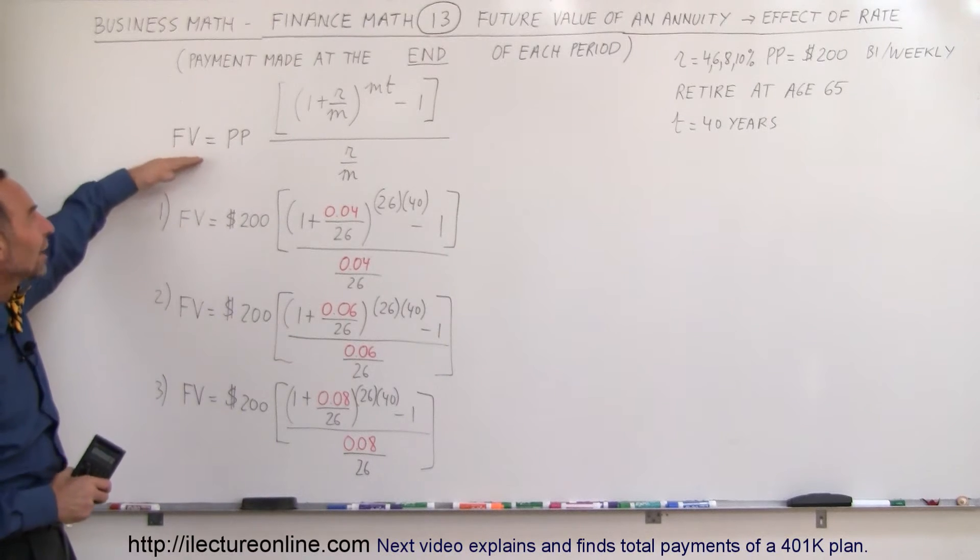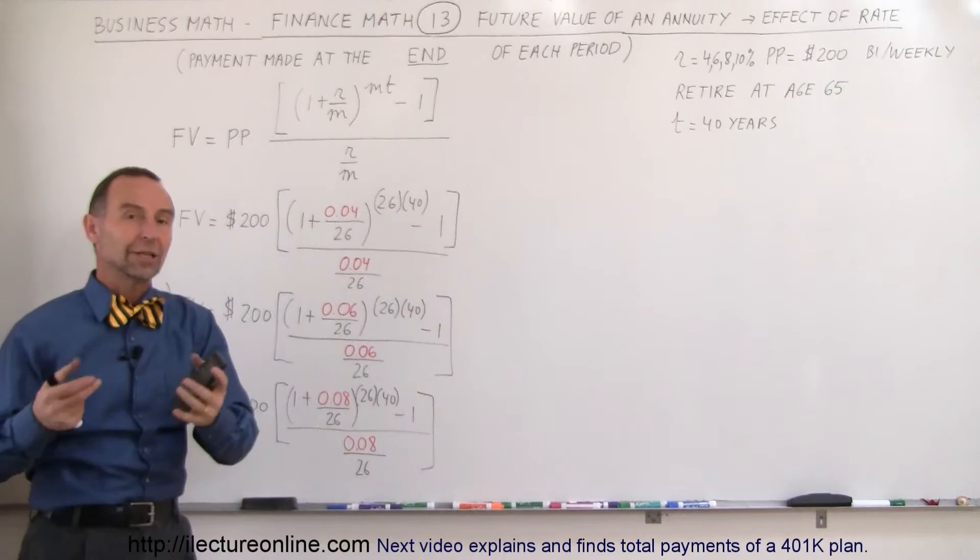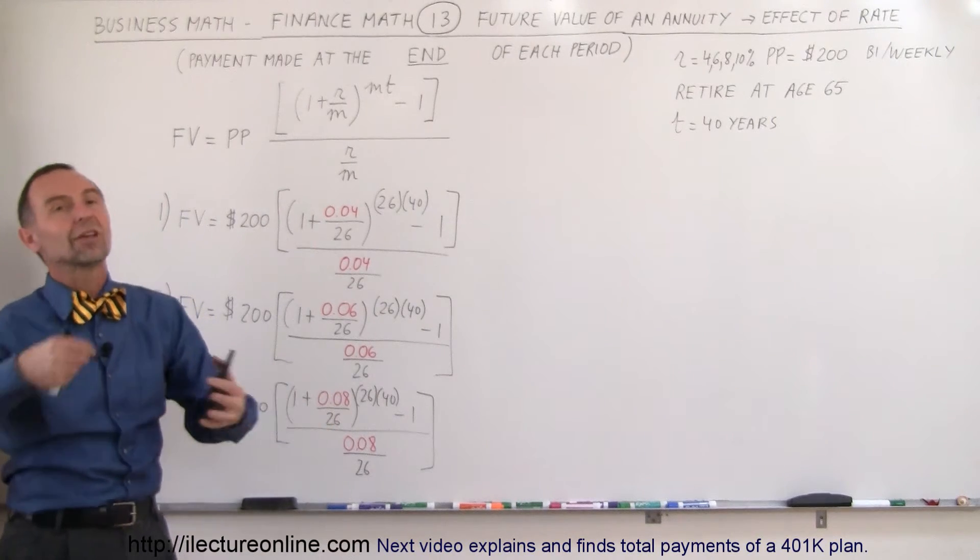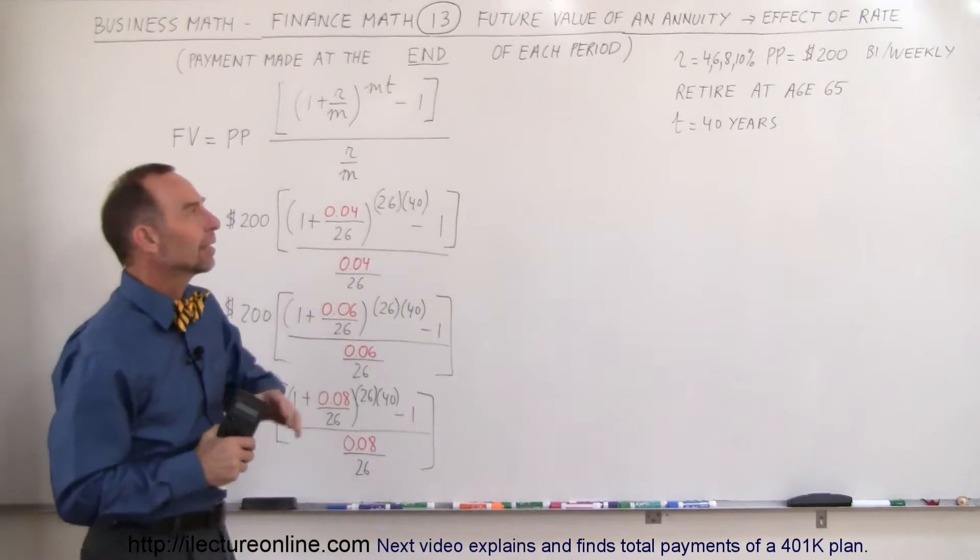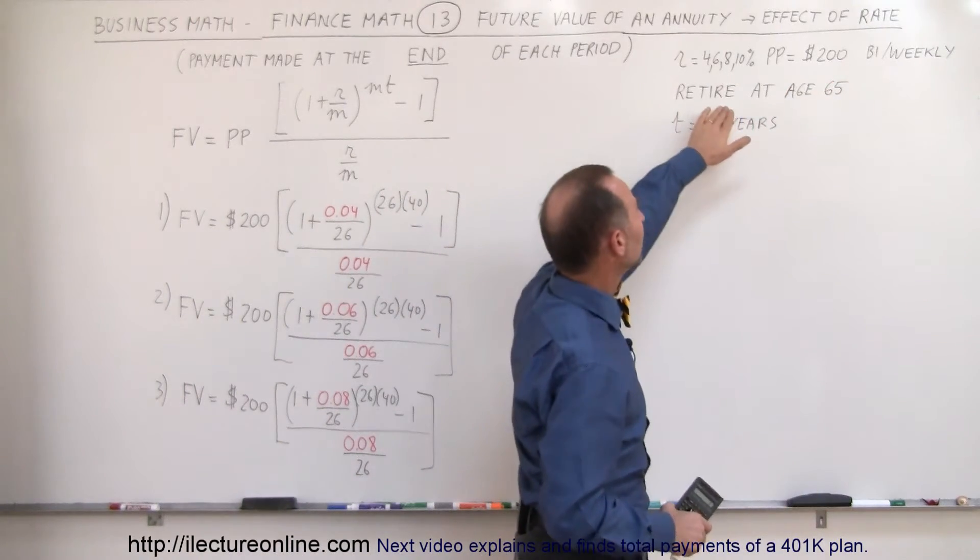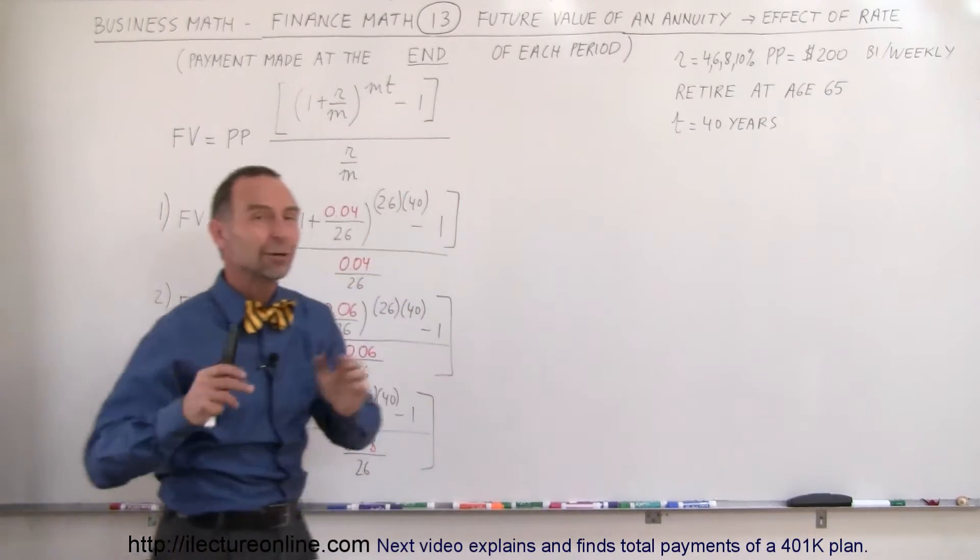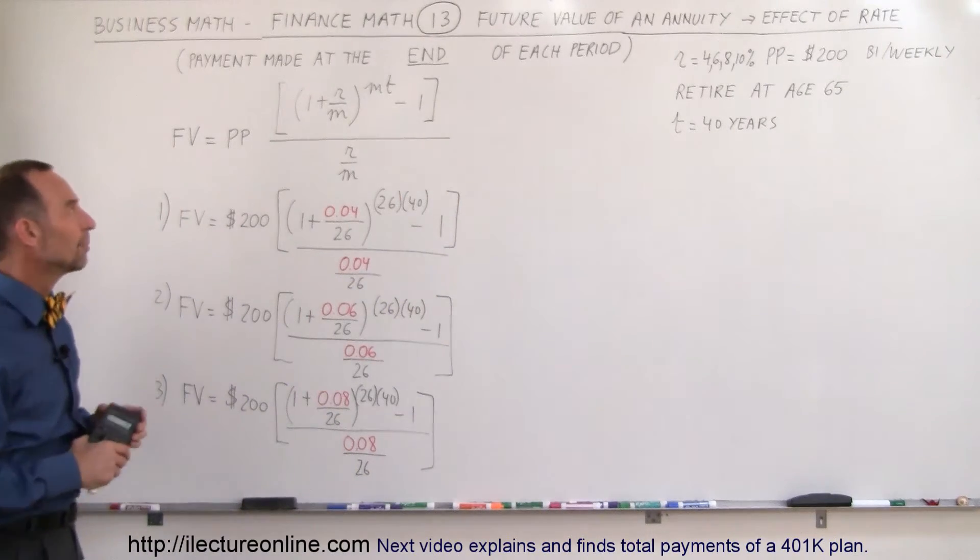We're going to calculate the future value of an annuity. The payment is made at the end of each period. Typically you get paid on the paycheck after two weeks and you take some money out for the annuity. Let's assume that we take out $200 every two weeks. Let's assume that you retire at age 65 and that you started saving at age 25, so you had a 40-year period to save for your retirement.